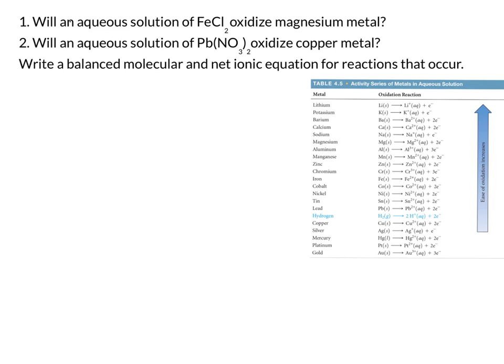So the application here is going to be applied in these two questions here. So we're going to look at this first question asks if an aqueous solution of iron to chloride will oxidize the magnesium metal. And in order to answer this, we're going to utilize this activity series chart, and they've also asked us to write a balanced molecular and net ionic equation for any reactions that will actually occur. So let's go ahead and apply this.